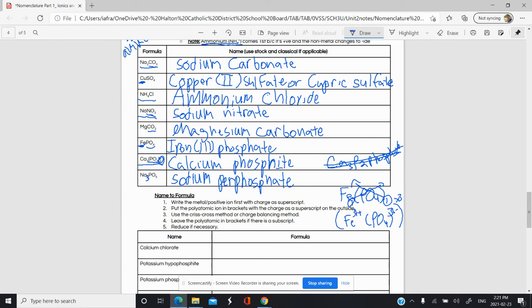So it becomes 3, 3 plus. So this is iron 3 phosphate. Or, classic name, ferric phosphate.